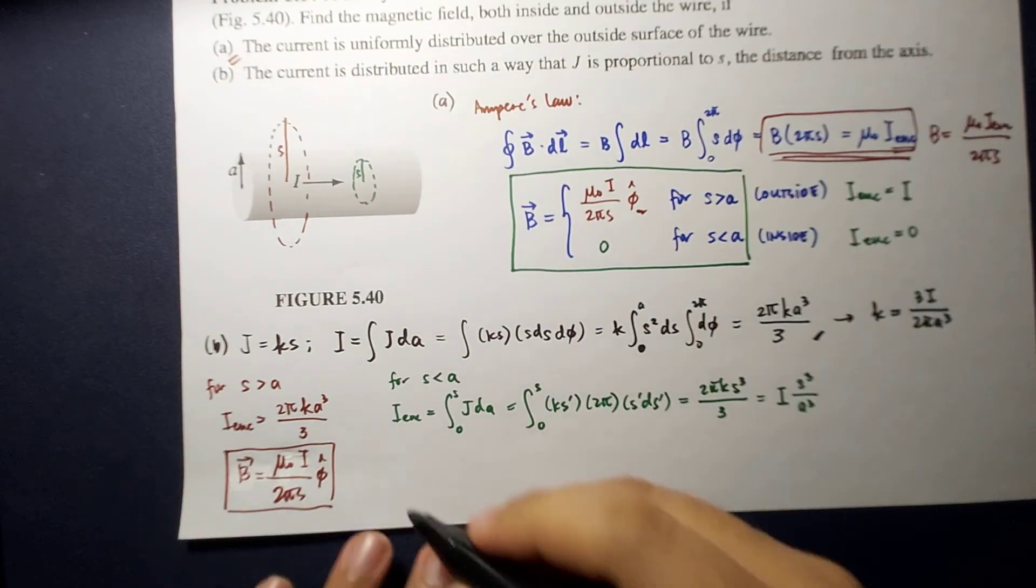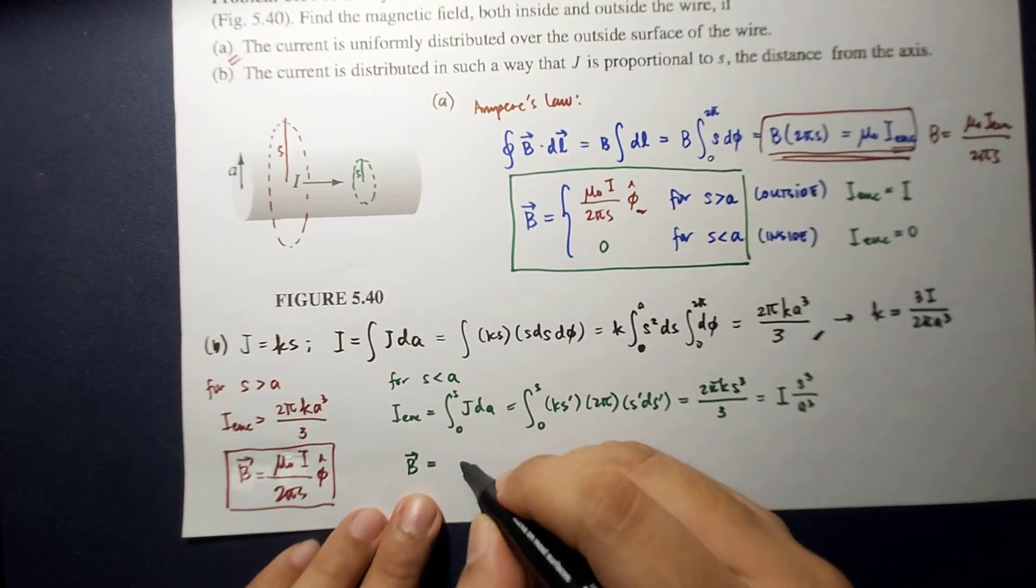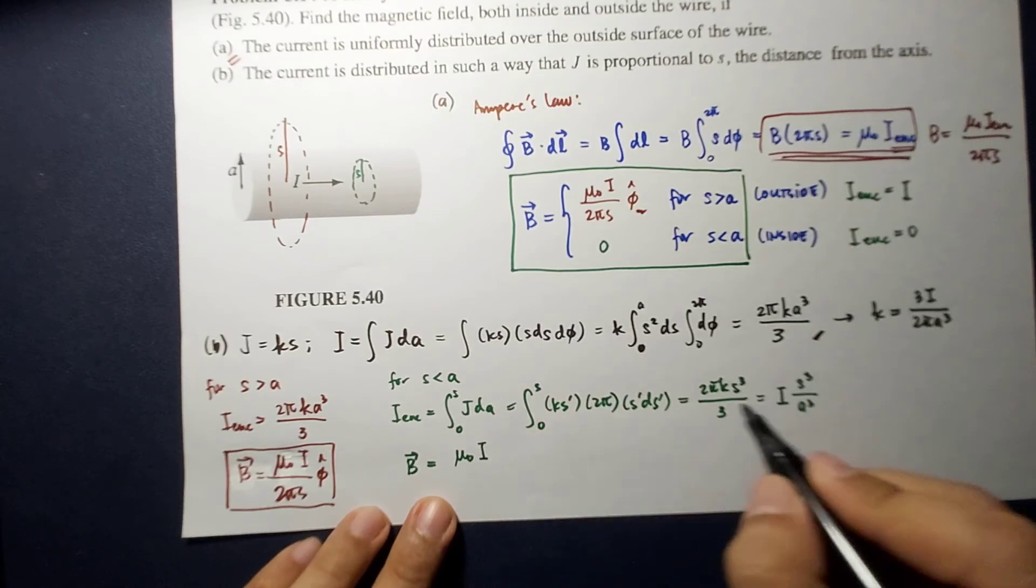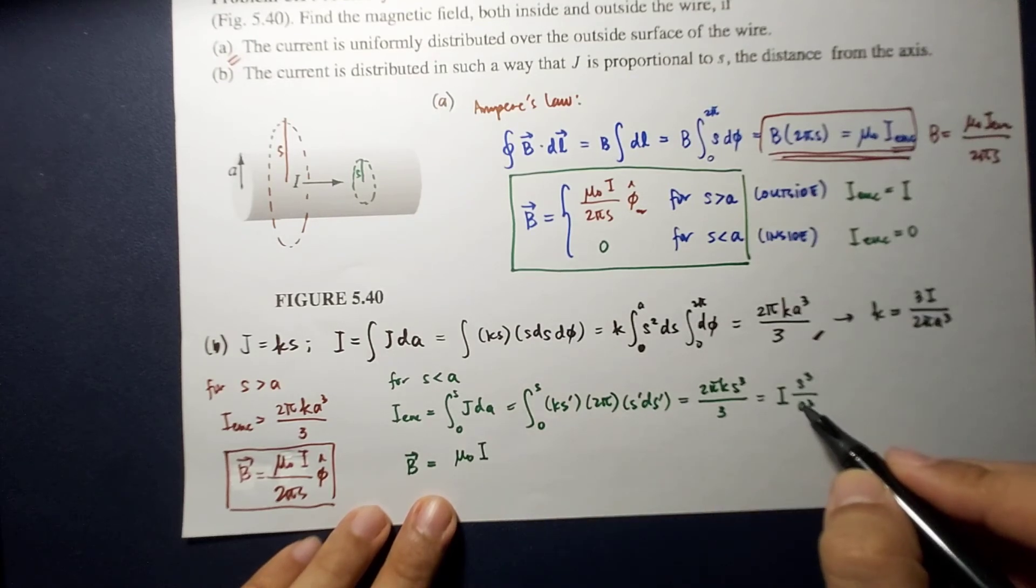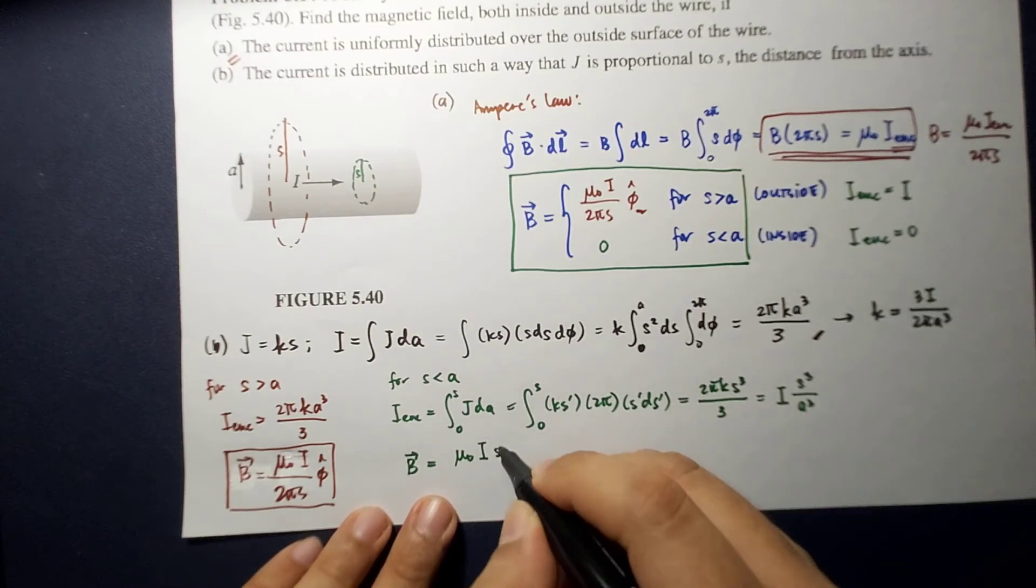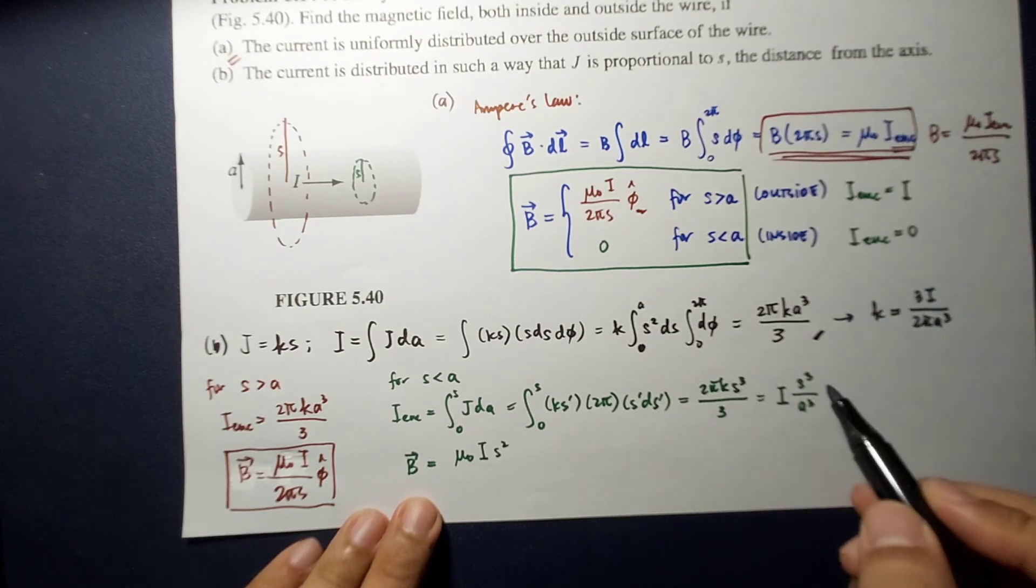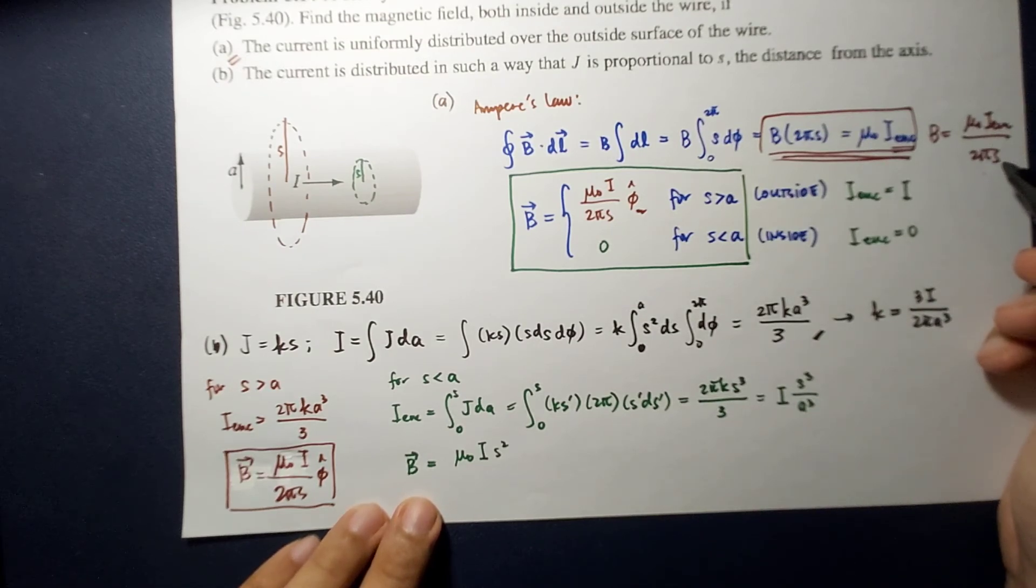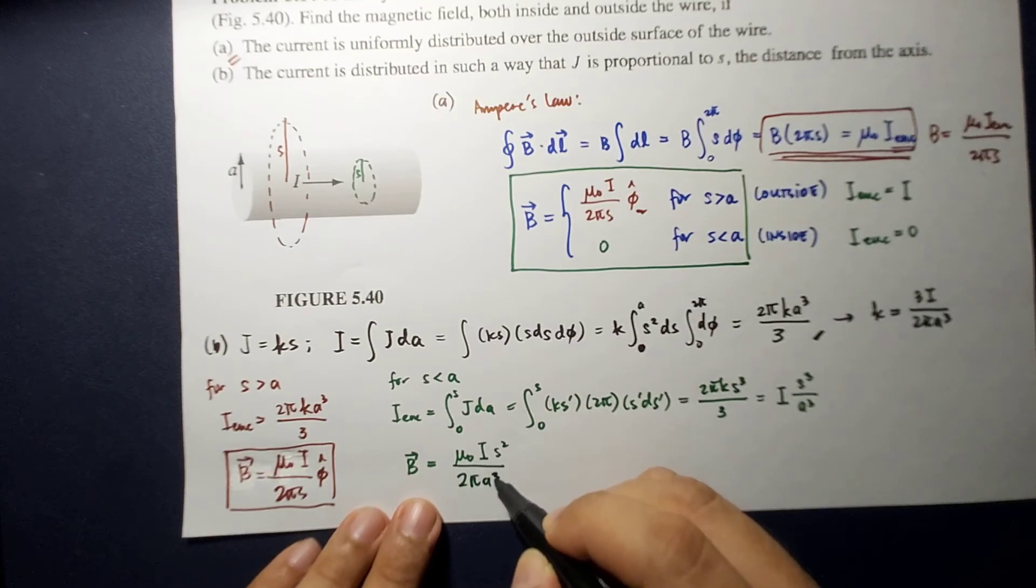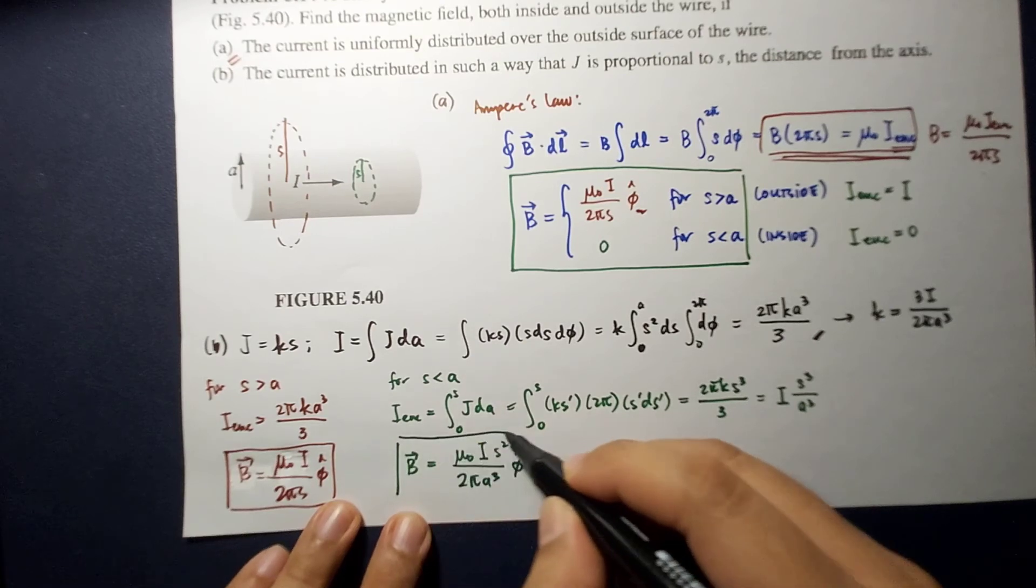now for inside, the magnetic field will now be equal to mu naught I S cubed. So S squared, sorry, let me substitute here. So S cubed here will cancel with S here over 2 pi A cubed. Again, the direction is along the P hat.